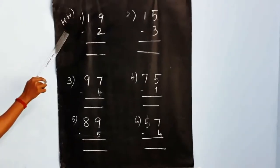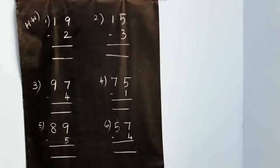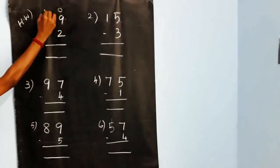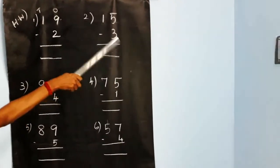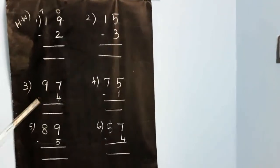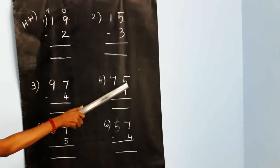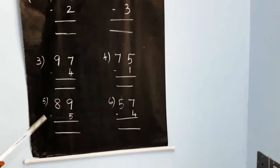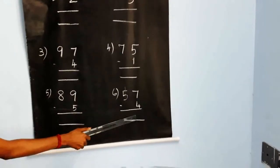This is done. This is a homework. First sum: nineteen minus two — put the place value, ones and tens. Second sum: fifteen minus three — put the place value, ones and tens. Third sum: ninety-seven minus four. Fourth sum: seventy-five minus one. Fifth sum: eighty-nine minus five. Sixth sum: fifty-seven minus four.